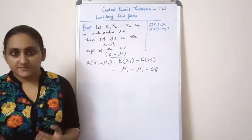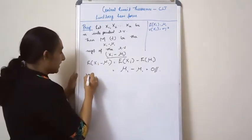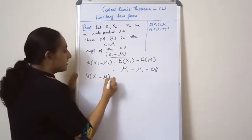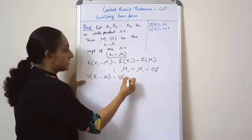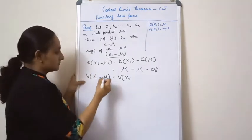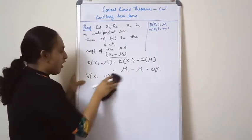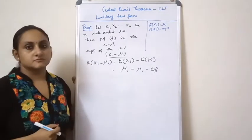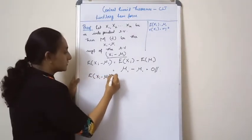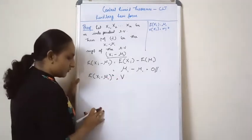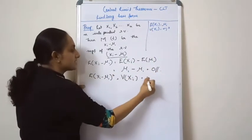Now let's find out the variance of this random variable, which equals the variance of xi. And E[(xi - μ₁)²] = Var(xi) = σ₁².